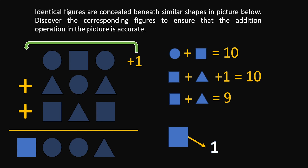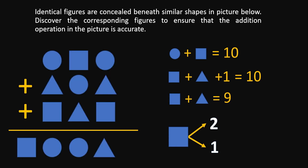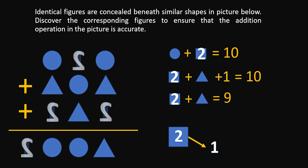What about the highest value for the square? We can find this by adding the three biggest three-digit numbers. Those numbers are 999, so 999 plus 999 plus 999 equals 2,997. This means the biggest value the square can have is 2. Let's start by replacing the square with a value of 2 — for all squares on both the right and left sides. On the right side, we can see that 2 plus triangle equals 9, so triangle must equal 7.